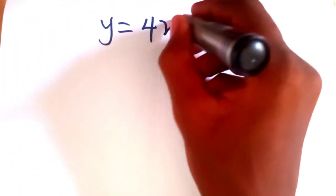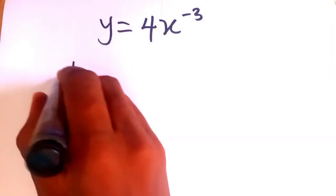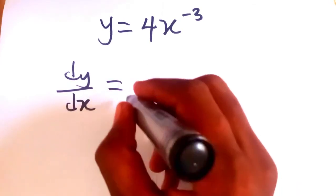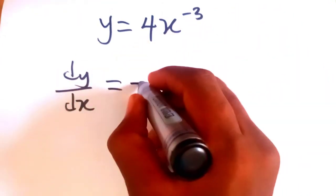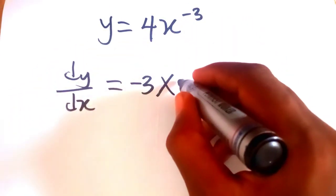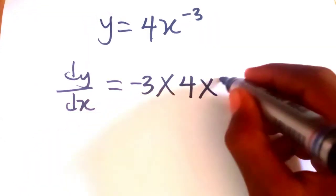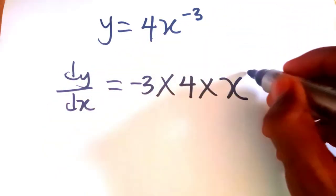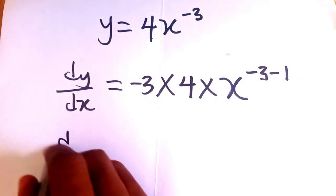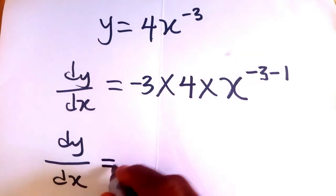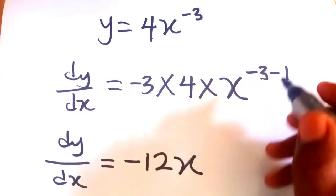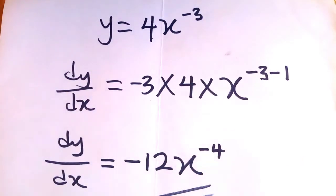Let's solve another question. We have a function y equal to 4x raised to the power of minus 3, and we need to find the derivative. So dy over dx — the coefficient of our derivative is the product of the power, which is minus 3, and the coefficient of x in our function, which is 4. So we have minus 3 times 4, giving minus 12. The new power is minus 3 minus 1, which is minus 4. So dy over dx equals minus 12x to the power of minus 4.